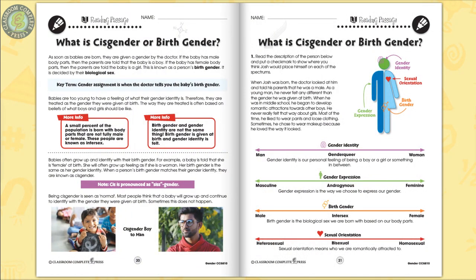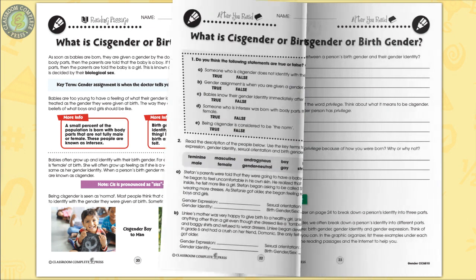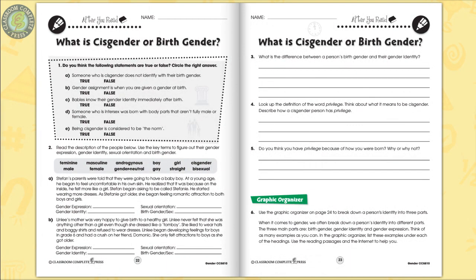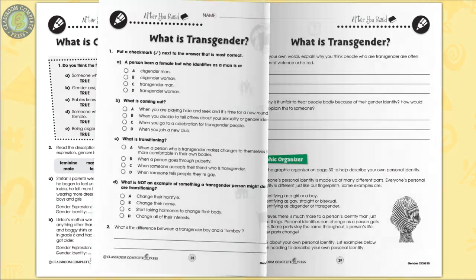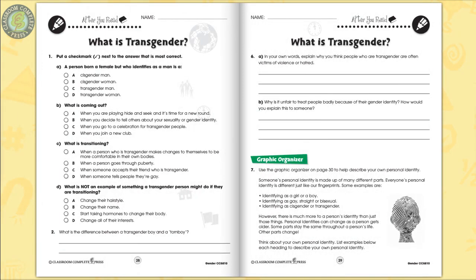The reading passage is where you'll find all the curriculum content. Students will learn that gender is personal — it is how we see ourselves. The after-you-read sections include short and long questions for comprehension, followed by a research activity.